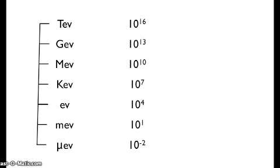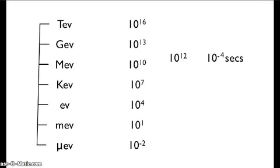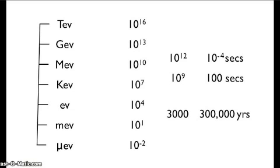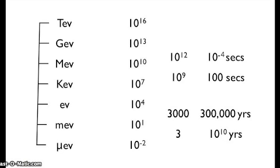At 10 to the minus 4 seconds, the temperature was 10 to the 12 Kelvin. At 100 seconds, the temperature was 10 to the 9 Kelvin. After 300,000 years, the temperature was 3,000 Kelvin. And today, the average temperature throughout the universe is 3 Kelvin.